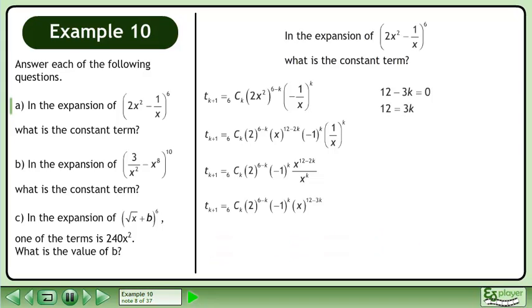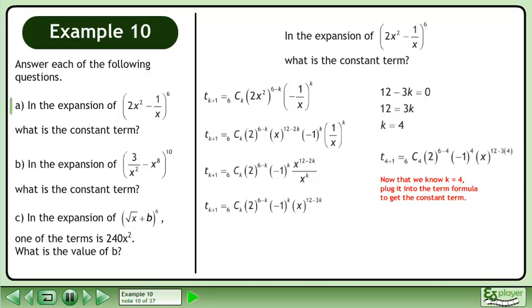Isolate the term with k. The value of k is 4. Now that we know k equals 4, plug it into the term formula to get the constant term.